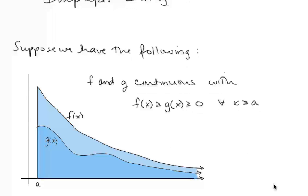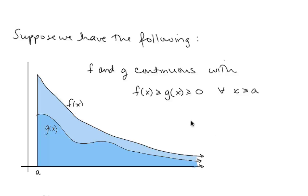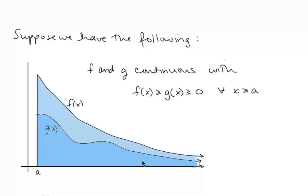Suppose we have f and g as continuous functions with f(x) ≥ g(x) ≥ 0 for all x ≥ a. Graphically, the area under f(x) is bigger than the area under g(x). So if the integral of f(x) from a to infinity converges, then surely the integral of g(x) from a to infinity will also converge — it's a smaller area. If the area under f is finite, then certainly the area under g will also be finite.